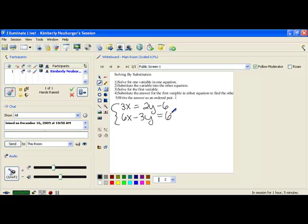Now, on this particular one, our first step is to solve for one variable in one equation. Notice neither equation has a variable by itself. You always want to pick whichever equation is going to make it easiest for you to get a variable by itself.